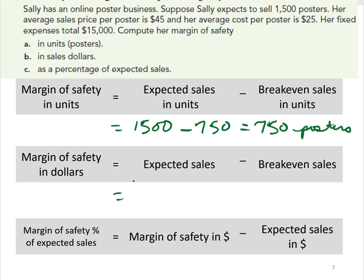We can also do this calculation in dollars. First we need to calculate expected sales in dollars. We know the price is $45 per poster and she expects to sell 1,500 posters, so 1,500 units times $45 per poster means expected sales equal $67,500.